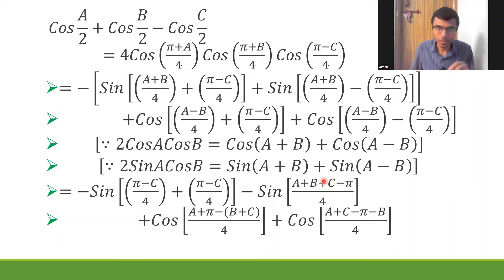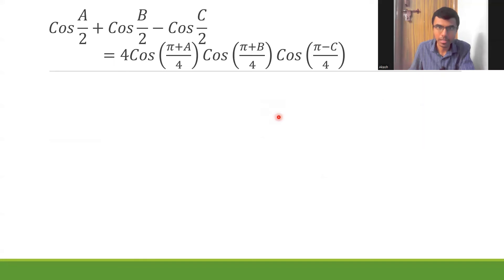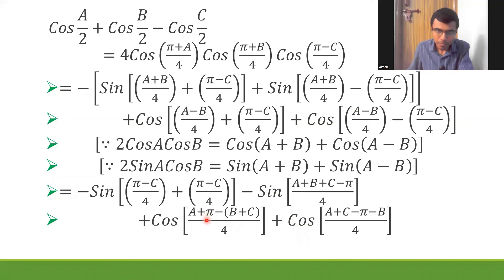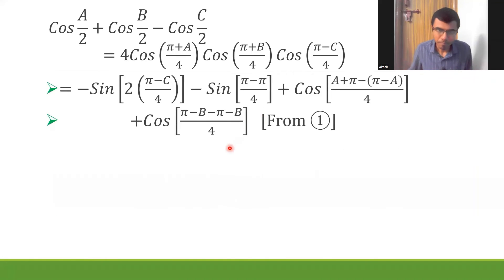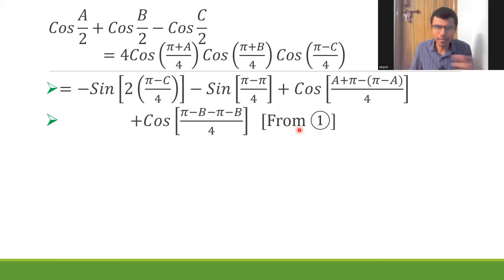Also, a + b + c = π means this becomes −sin(π − π)/4. For b + c, since a + b + c = π, b + c = π − a. For a + c, a + c = π − b. So substituting, I get π − a and π − b in the appropriate places. I reference condition (1) here so the examiner sees I'm using the marked condition.